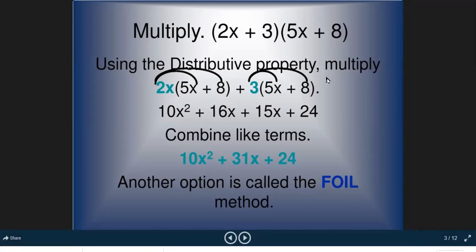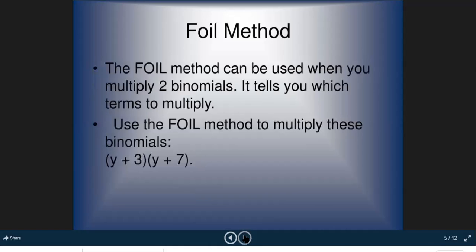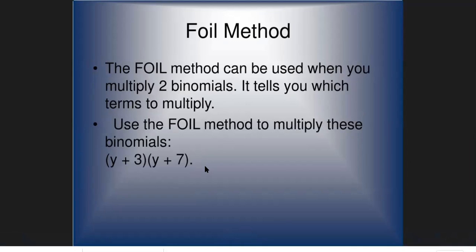The second method is called FOIL — F for First terms, O for Outer terms, I for Inner terms, and L for Last terms. The FOIL method can only be used when multiplying two binomials. If you have a binomial multiplied by a trinomial, the distributive method is better to use.